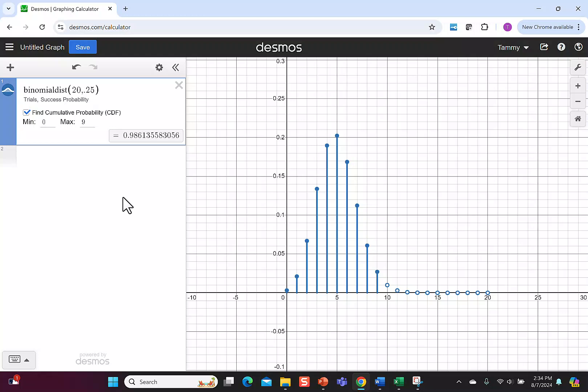This says getting less than 10 correct is very likely. In fact, it's 98.61%, so you can write that as 0.9861.